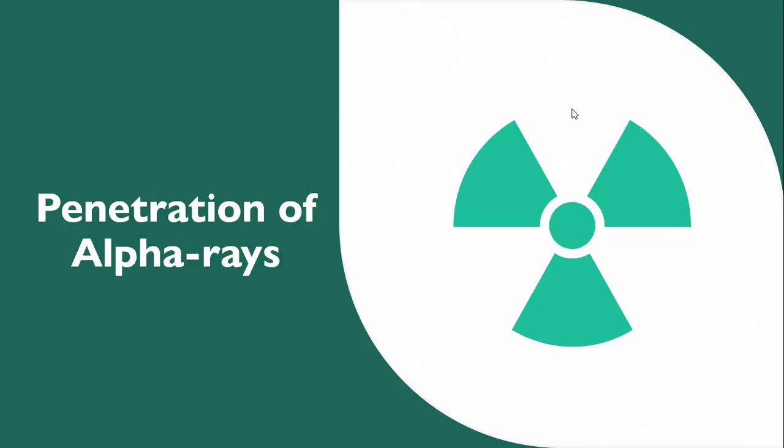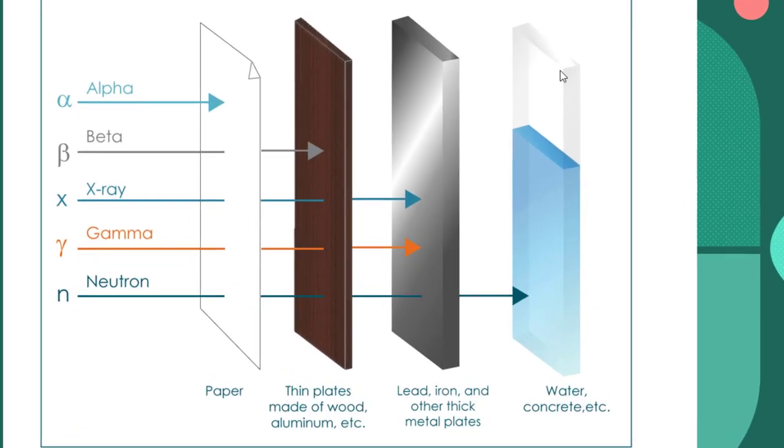And next, we discuss the penetration of alpha rays. The alpha particles have very small penetrating power and they are stopped by a sheet of paper or by a thin foil of aluminum or by a few centimeters of air at atmospheric pressure.